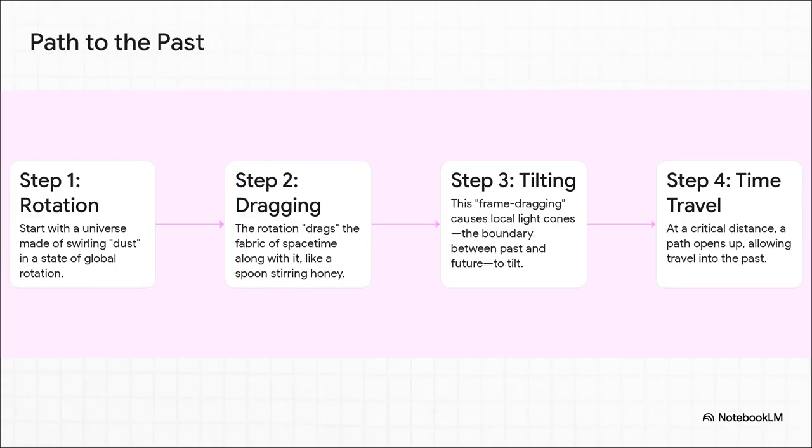Think of it this way. The universe is filled with matter, just a swirling fluid of stuff. As it all spins together, it literally drags space time along for the ride. It's an effect called frame dragging, and it's like stirring a spoon through thick honey. This twisting motion starts to tilt what physicists call light cones, which is just the boundary between your past and your future.